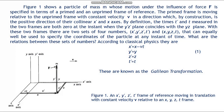Figure 1 shows a particle of mass M whose motion under the influence of force F is specified in terms of a primed and unprimed frame of reference. The primed frame is moving relative to the unprimed frame with constant velocity v in a direction which by construction is the positive direction of the collinear x-asterisk and x-axis. By definition the times t-asterisk and t measured in the two frames are both zero at the instant when the y-asterisk z-asterisk plane coincides with the y-z plane. With these two frames there are two sets of four numbers — x-asterisk, y-asterisk, z-asterisk, t-asterisk and x, y, z, t — that can equally be used to specify the coordinates of the particle at any instant of time.